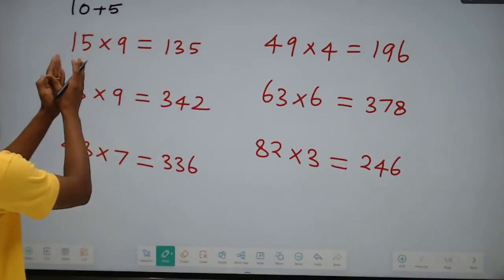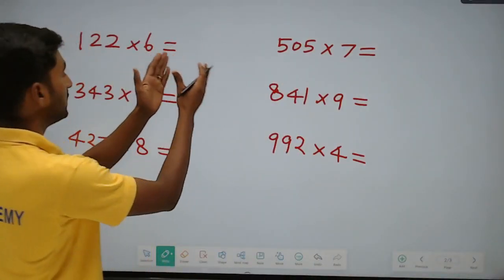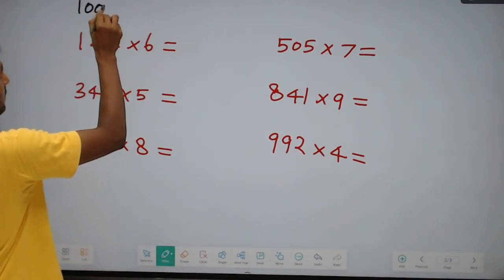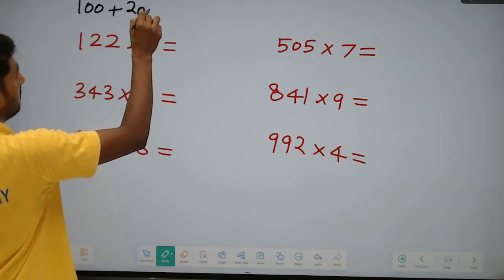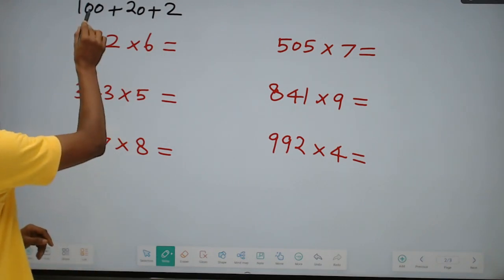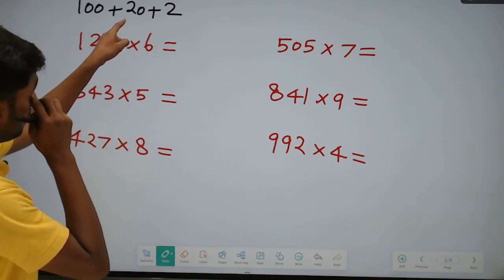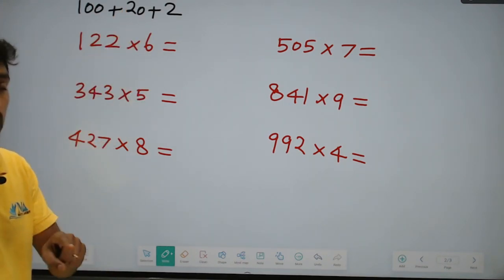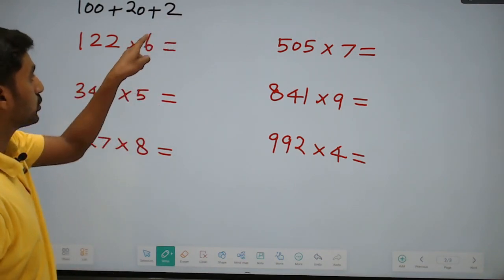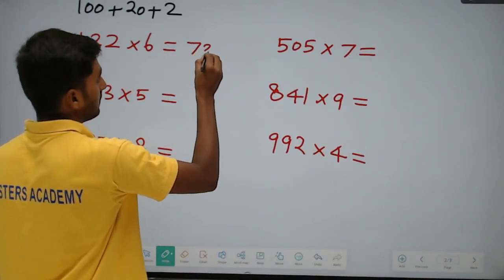Among these, 2-digit into single-digit is done. Next, 3-digit into single-digit — the same procedure. For 122, split into 100 plus 20 plus 2 — splitting into hundreds, tens, and ones. 100 into 6 is 600. Plus 20 into 6 is 120. 600 plus 120 is 720. Plus 2 into 6 is 12. 720 plus 12 is 732.